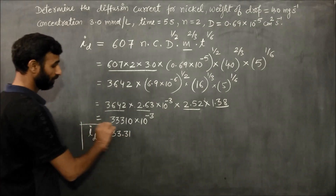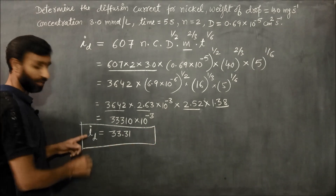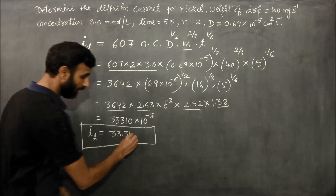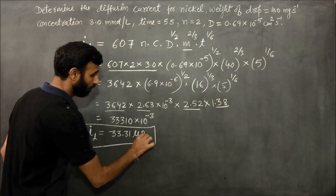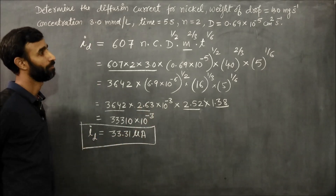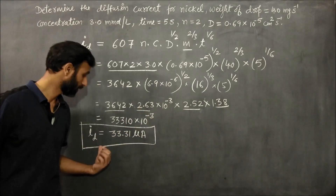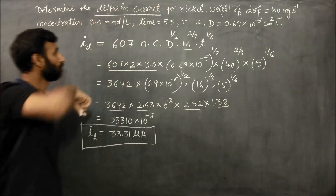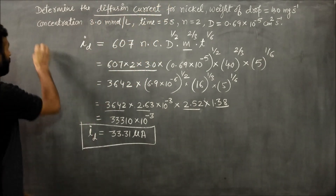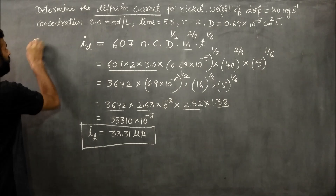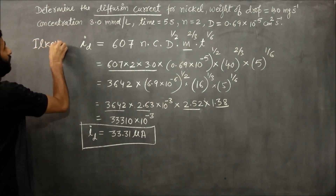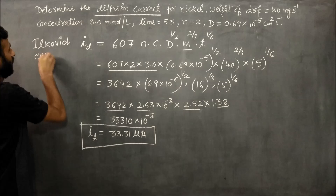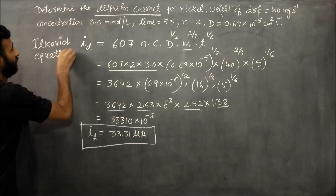According to the Ilkovic equation, this average diffusion current id comes out to be in microamperes. So the diffusion current is 33.31 microamperes. By using the Ilkovic equation we can calculate the diffusion current.